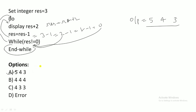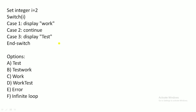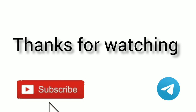The next question: integer i = 2. Switch(i) — it will match case 2, which contains a 'continue' statement. The key point is that 'continue' cannot be used in a switch statement; it can only be used inside loop constructs. So this code will throw a compilation error. There is no output — it simply throws an error.